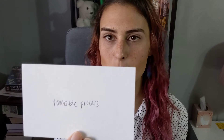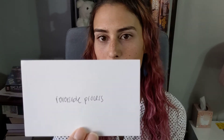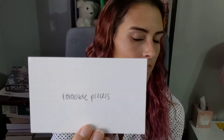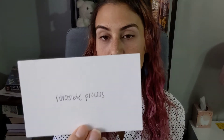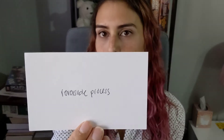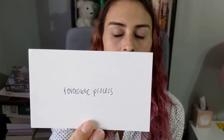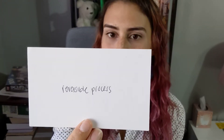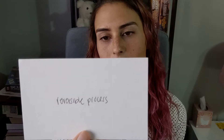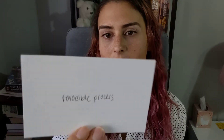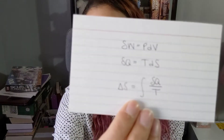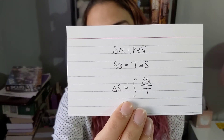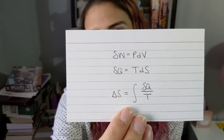A reversible process is one in which delta W equals P dV, delta Q equals T dS, and delta S equals the integral of dQ over T — for a reversible process.